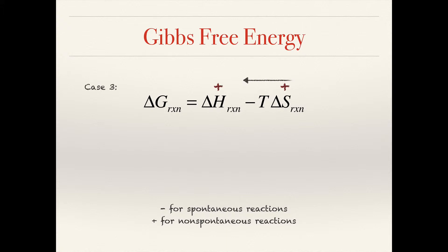The more interesting cases occur when the signs of ΔH and ΔS are the same — temperature will play a deciding role only in these cases. In case three, with a positive ΔH and positive ΔS, the minus TΔS term will be negative, creating a competition: ΔH is positive tending to make ΔG positive, but the minus TΔS term is negative tending to make ΔG negative. We can't offer a concrete analysis until we look at the temperature.